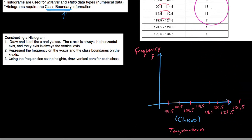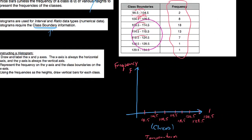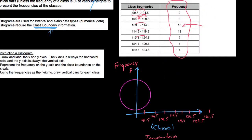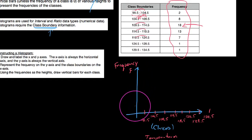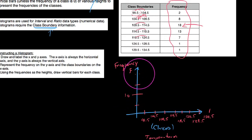Our goal is to reflect the frequency of each class on top of their respective class intervals. The highest frequency in our data is 18, so we only need to go up to about 20 on the y-axis. We'll mark it going up by 5: so 10, 15, 20.